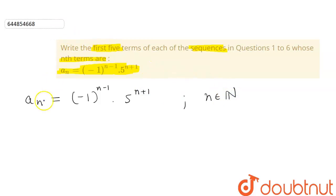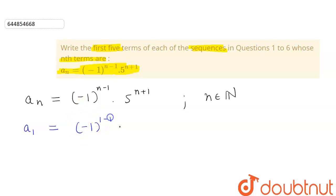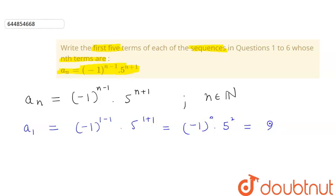We have to find the first five terms, for which we will put the value of n from 1 to 5. For a1, we substitute n = 1: (-1)^(1-1) × 5^(1+1) = (-1)^0 × 5^2. Anything to the power zero is equal to 1, so this will be equal to 25.